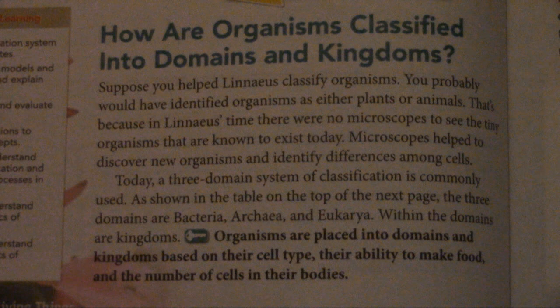How are organisms classified into domains and kingdoms? Suppose you helped Linnaeus classify organisms. You probably would have identified organisms as either plants or animals. That's because in Linnaeus' time, there were no microscopes to see tiny organisms that are known to exist today. Microscopes help to discover new organisms and identify differences among cells. Today, a three-domain system of classification is commonly used.